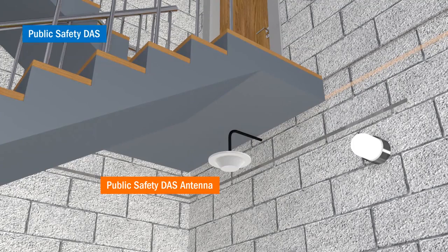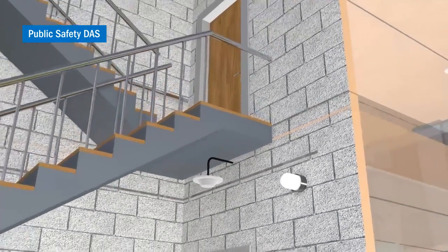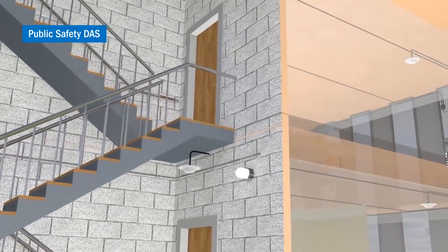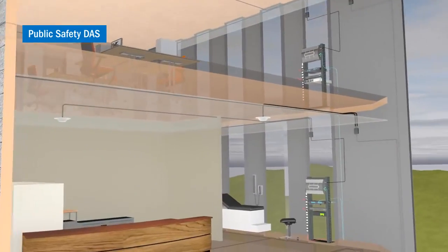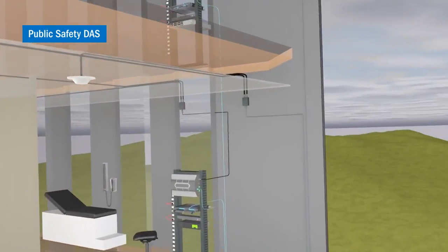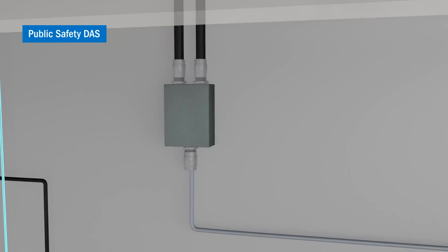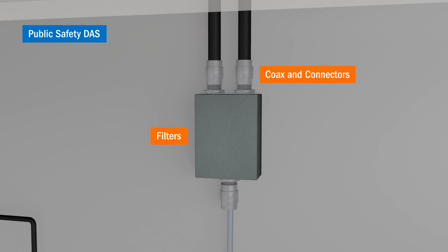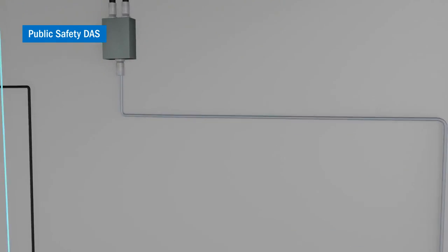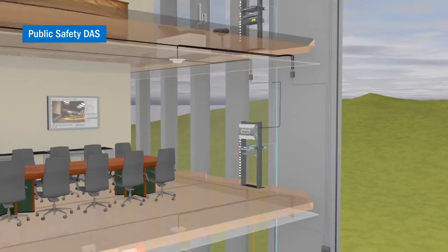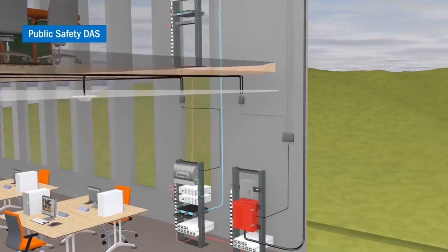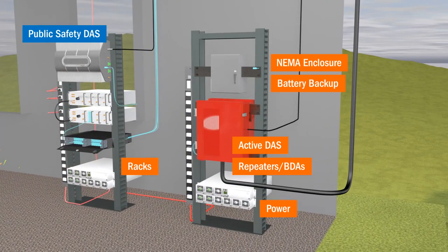What is Public Safety DAS? Public Safety DAS provides coverage for first responders in all parts of a building to allow them to use their emergency radios seamlessly. A Public Safety DAS solution can be required to get a Certificate of Occupancy for a new or renovated building, to meet the National Fire Protection Association codes mandated by the authority having jurisdiction.